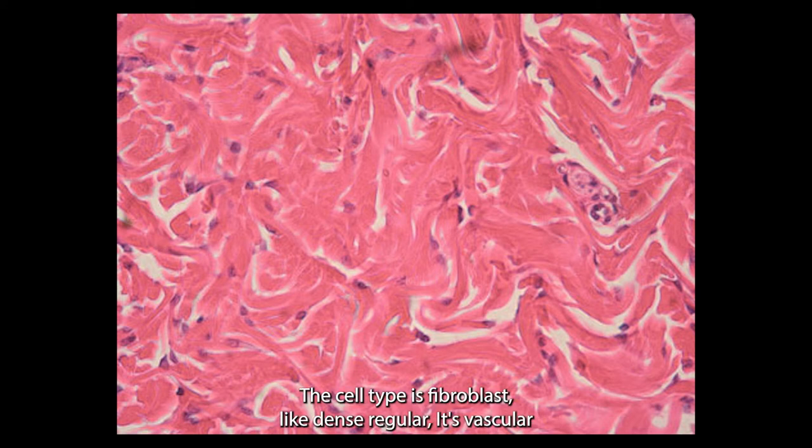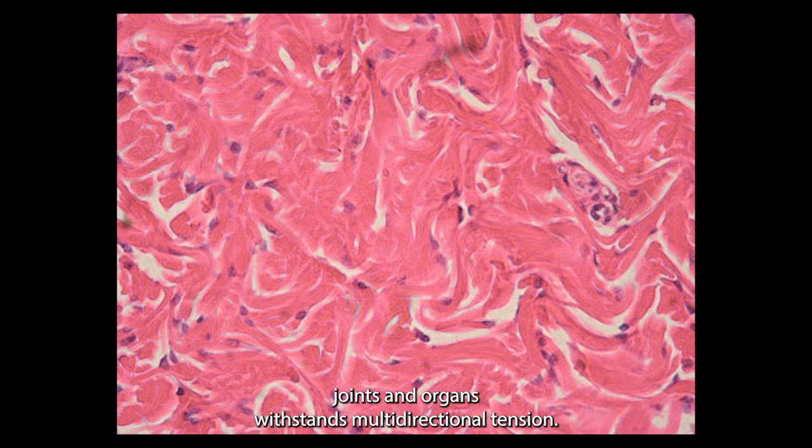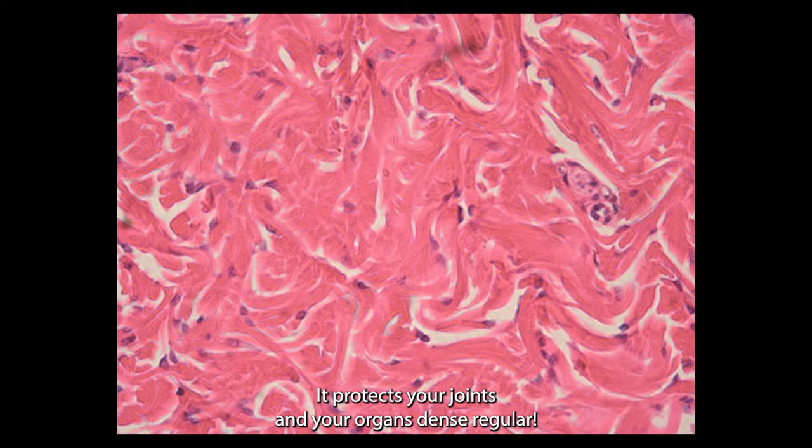Like dense regular it's vascular. It's located in the skin dermis, digestive tract submucosa, fibrous capsules around joints and organs. Withstands multidirectional tension. It protects your joints and your organs. Dense irregular.